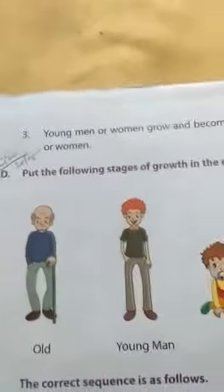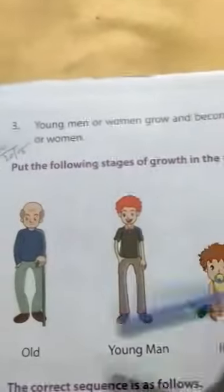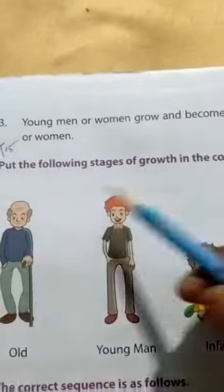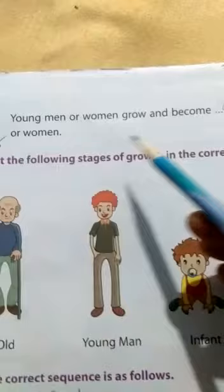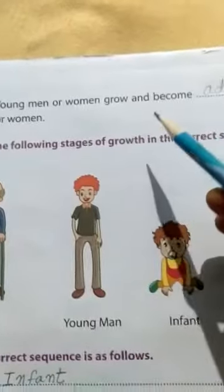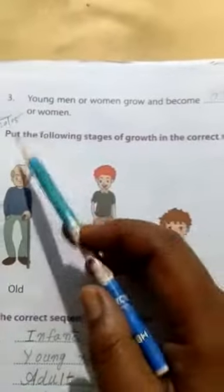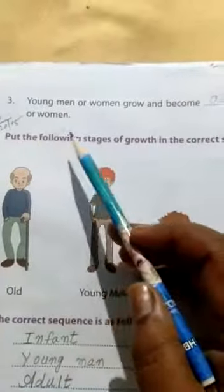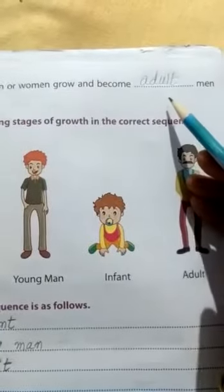So children, let's turn the page. Question number 3: young men or women grow and become dash men or women. The right answer is adult.